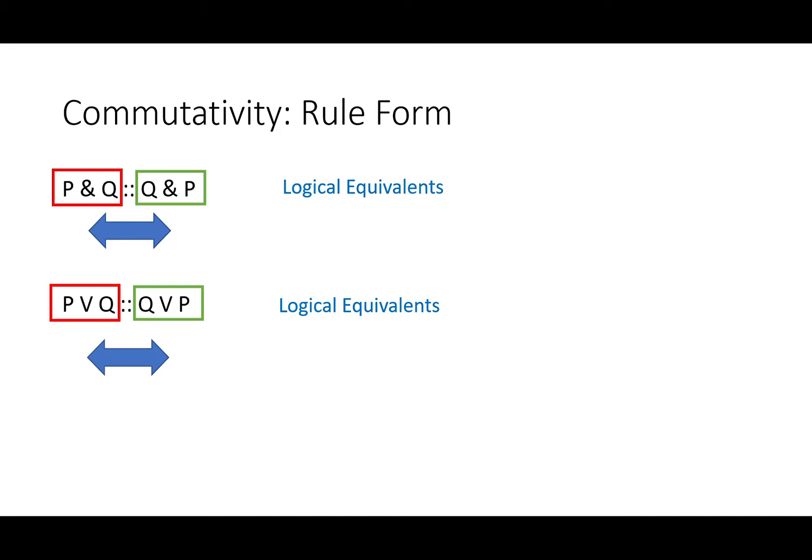As a rule of replacement, commutativity, like associativity, tells us about two logical equivalents. It is not describing a mini-argument like a rule of inference.